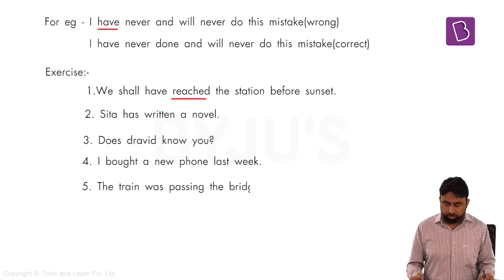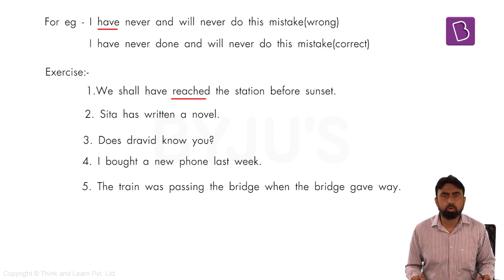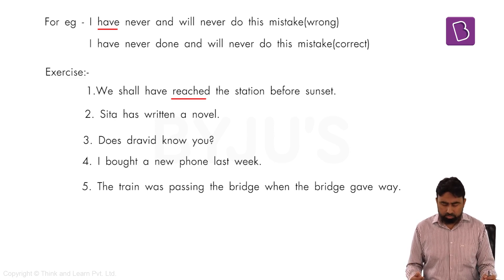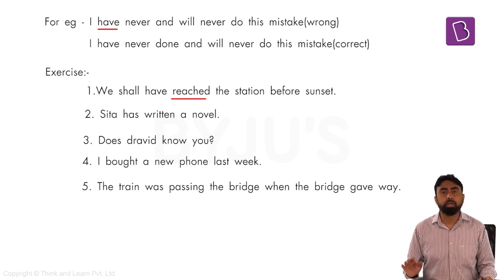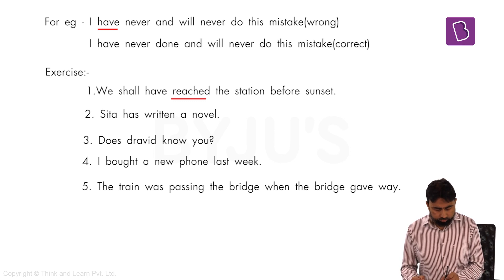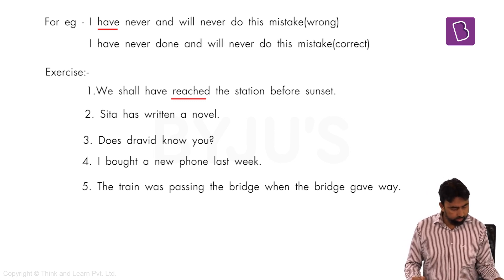Sentence: 'The train ___ the bridge when the bridge gave way.' 'Gave way' is a phrasal verb meaning to break or collapse. Options: A) past, B) was passing, C) has been passing, D) will be passing. Since 'gave way' is past tense, option D (future) cannot be used, and C (has been passing) is also ruled out. We're left with A or B, both in past tense.